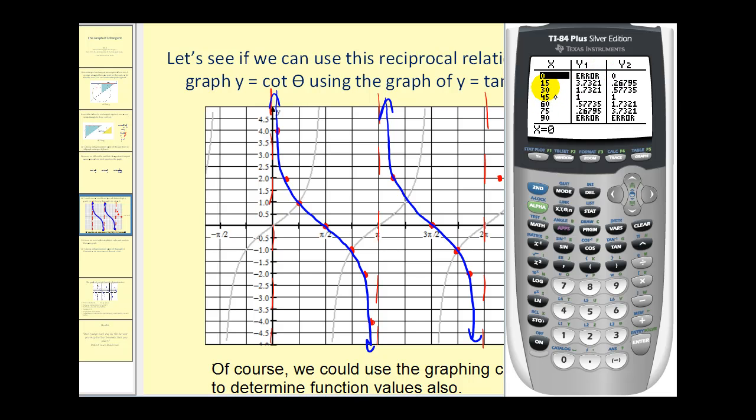At fifteen degrees, we have approximately four. At forty-five degrees, pi over four radians, we're at one. The calculator does have a problem at ninety degrees or pi over two radians, because we're using the tangent function to evaluate this. Since at ninety degrees tangent is undefined, the calculator cannot evaluate this for cotangent theta. It is important that we recognize the relationship between the graph of tangent theta and cotangent theta. This can be helpful for most values of cotangent theta.